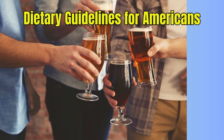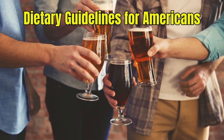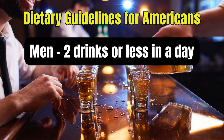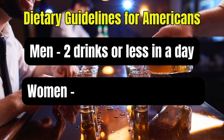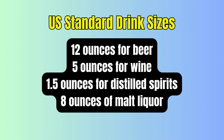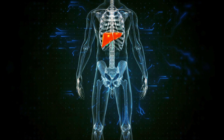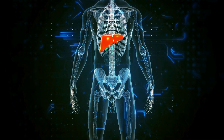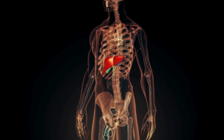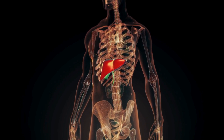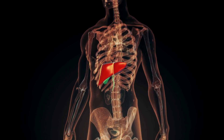The Dietary Guidelines for Americans recommends drinking in moderation by limiting intake to two drinks or less in a day for men or one drink or less in a day for women. The U.S. standard drink sizes are 12 ounces for beer, 5 ounces for wine, 1.5 ounces for distilled spirits or hard alcohol, and 8 ounces of malt liquor. Understanding the impact of alcohol on the liver is crucial for anyone looking to maintain their liver health. Limiting alcohol intake, or avoiding it altogether, is one of the most direct steps one can take to prevent the development of fatty liver disease.